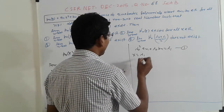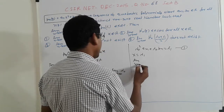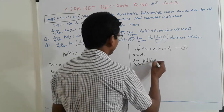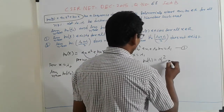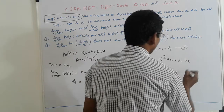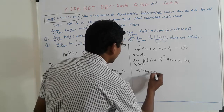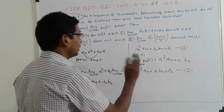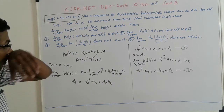Similarly, for x = λ₁, we take lim (n→∞) p_n(λ₁) = λ₁²·a_n + λ₁·b_n. Suppose this exists and equals l₂. Now we have the second equation: λ₁²·a_n + λ₁·b_n = l₂. We now solve equations 1 and 2.